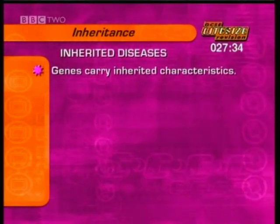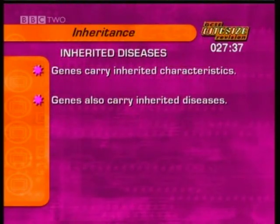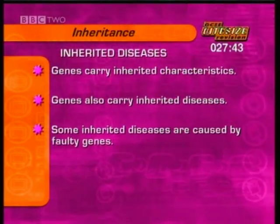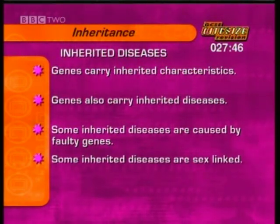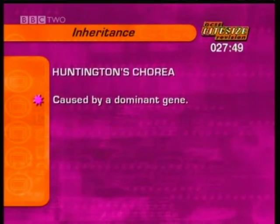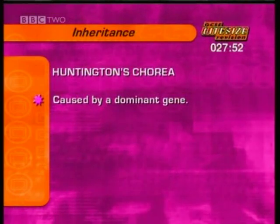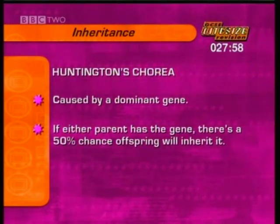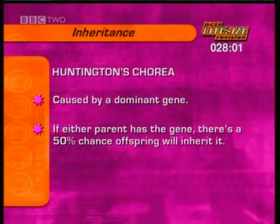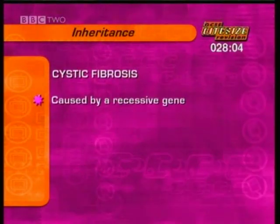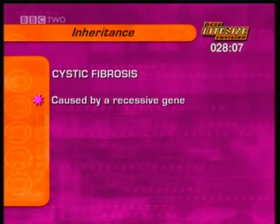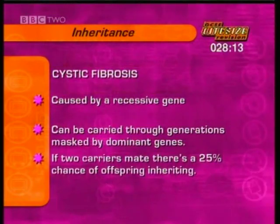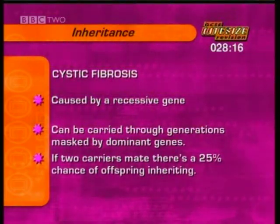As well as carrying the characteristics we inherit from our parents, genes can pass on any inherited diseases that may run in the family. Some inherited diseases are caused by faulty genes; some are sex linked. Huntington's chorea is caused by a dominant gene — if either parent has the gene, there is a 50% chance the offspring will inherit it. Cystic fibrosis is caused by a recessive gene and can be carried from generation to generation, masked by dominant genes. But if two carriers mate, there is a 25% chance of the disease surfacing.